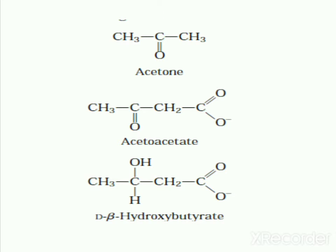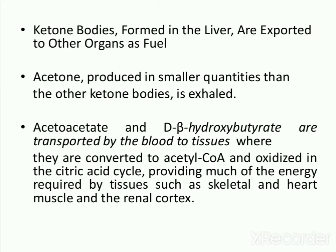The ketone bodies are acetone, acetoacetate, and d-beta-hydroxybutyrate. These are molecules containing a ketone group. The term 'ketone bodies' is a historical artifact — it was occasionally applied to insoluble particles, but these compounds are quite soluble in blood and sometimes in urine. Acetone is produced in smaller quantities than the other ketone bodies, and ketone bodies are formed in the liver and exported to other organs as fuel.